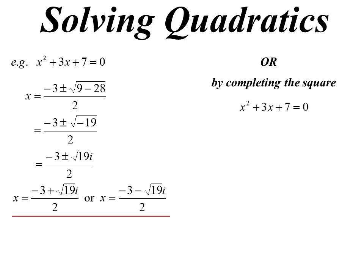Let's do the same quadratic: x squared plus 3x plus 7. For the difference of two squares, the key number is half the coefficient of x. Half of 3 is 3 on 2, so when we complete the square we get x plus 3 on 2, all squared. But that gives 9 on 4, not 7 — so to make it equal 7 we have to add 19 on 4.